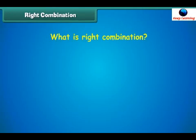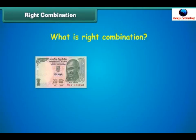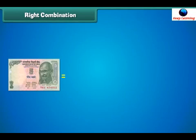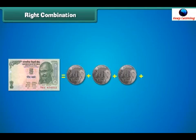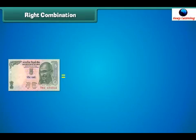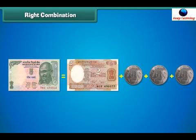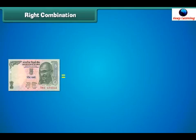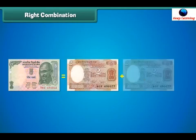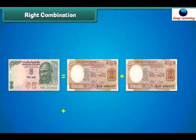Let us learn about some right combinations of notes and coins. One 5 rupee note is equal to the sum of 5 one-rupee coins. One 5 rupee note is also equal to the sum of 1 two-rupee note and 3 one-rupee coins. Similarly, one 5 rupee note is equal to the sum of 2 two-rupee notes and a 1 rupee coin. All these are right combinations.